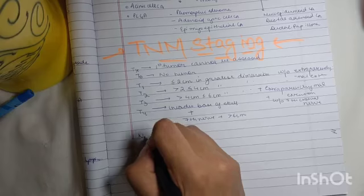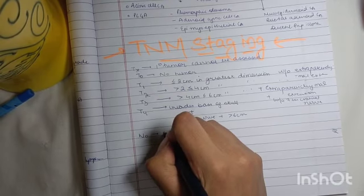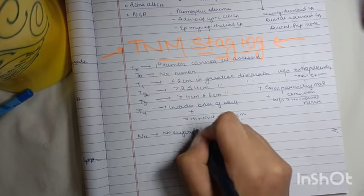Now coming on to N. N0 means that no regional node metastasis has occurred.